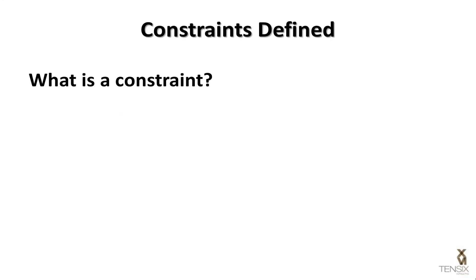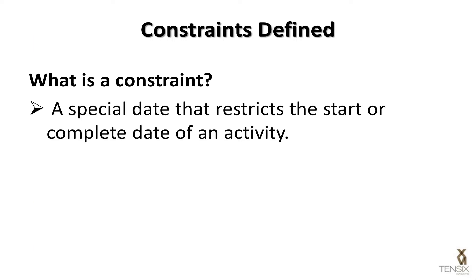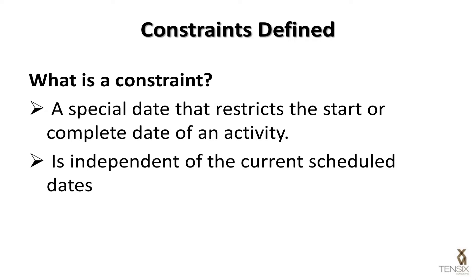So what is a constraint? A constraint is a special date that restricts the start or complete date of an activity. This date is independent of the activity's current scheduled dates.